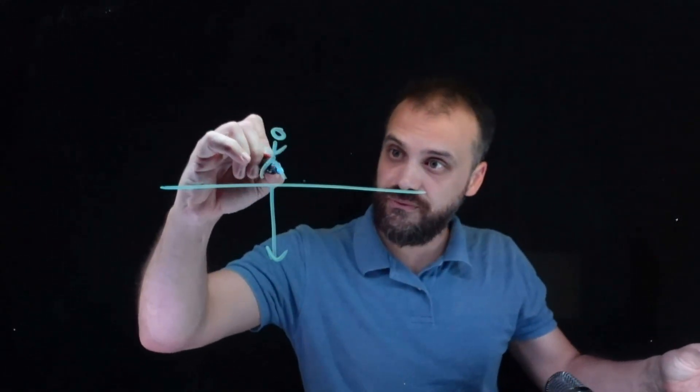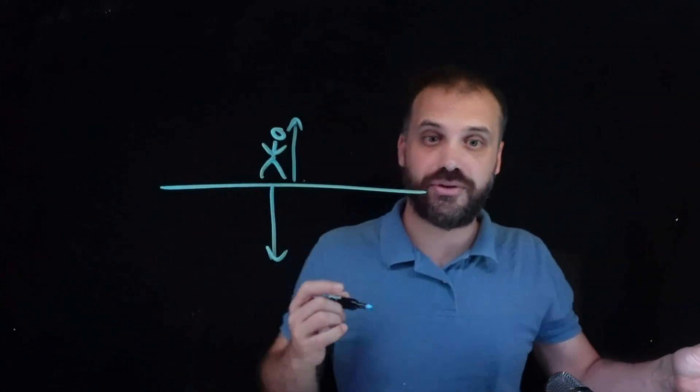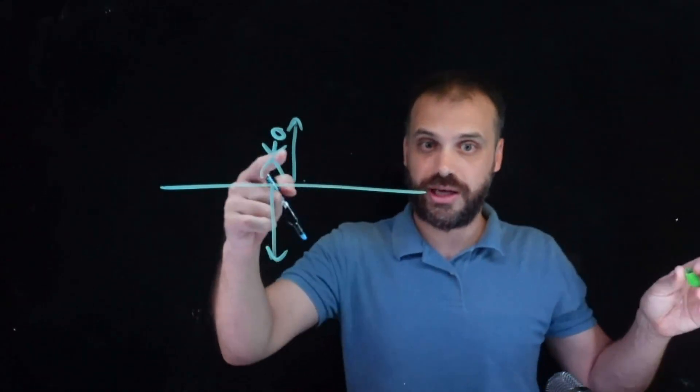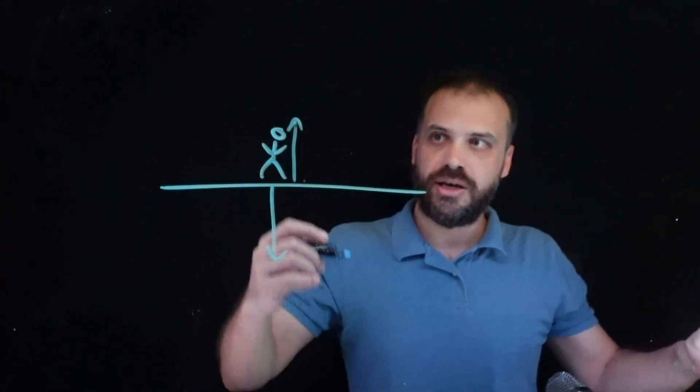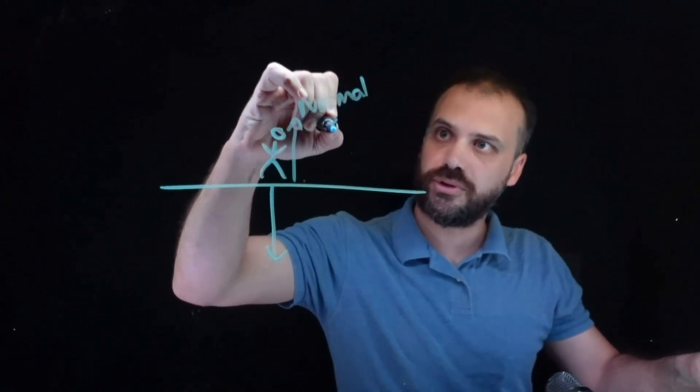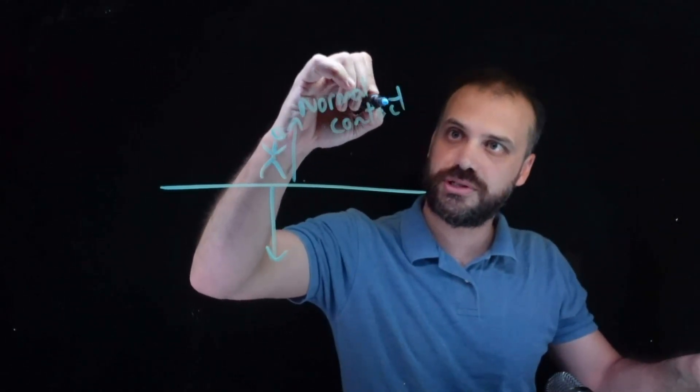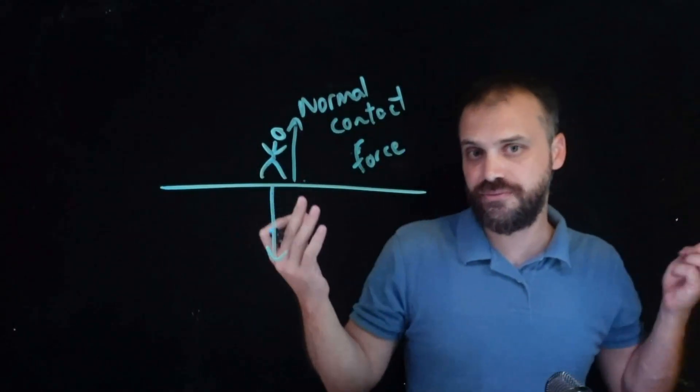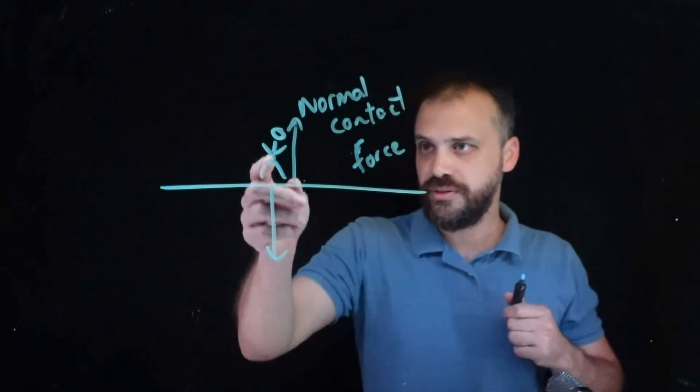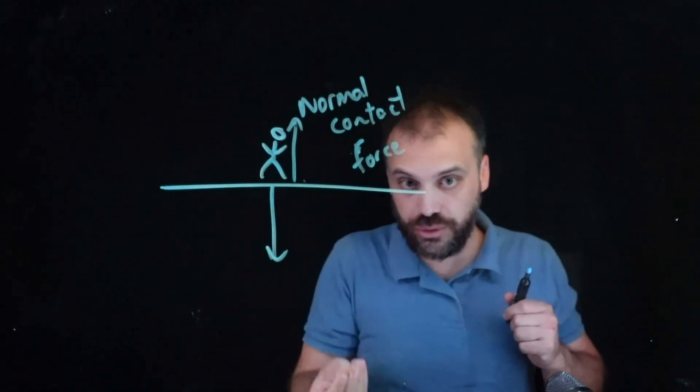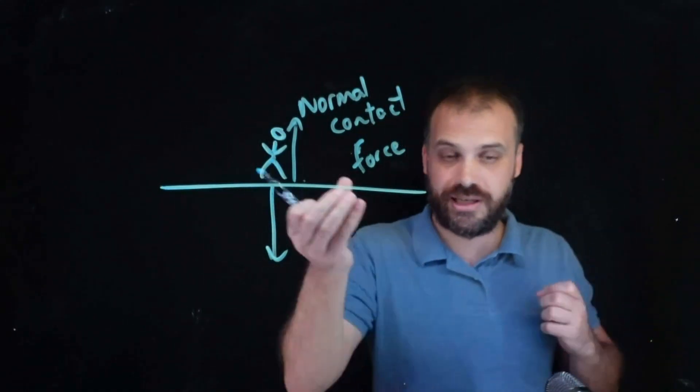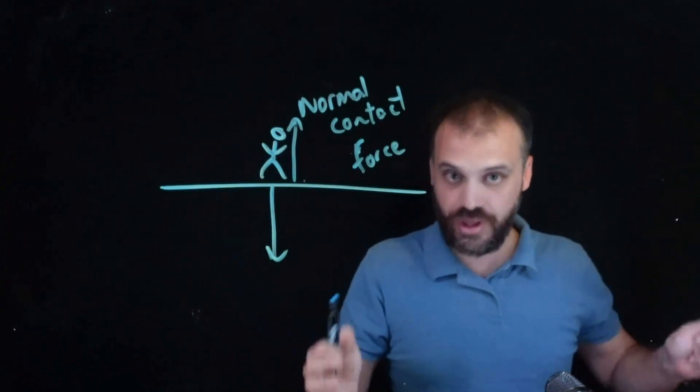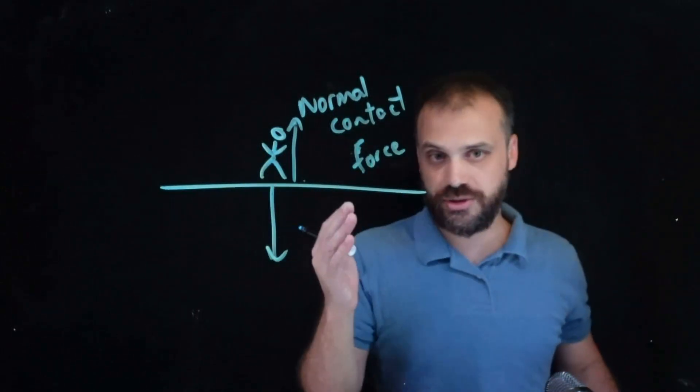So there is another force acting in the other direction, equal and opposite. We call that the normal contact force. That thing has to exist. If there is no normal contact force, then this person would just fall through the earth. There's nothing stopping them from just going... Okay, normal contact force, it's a thing.